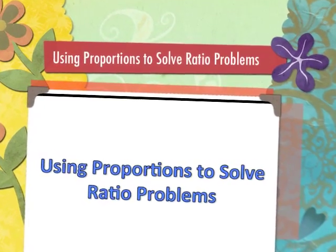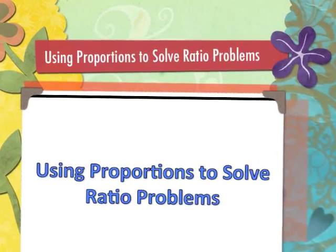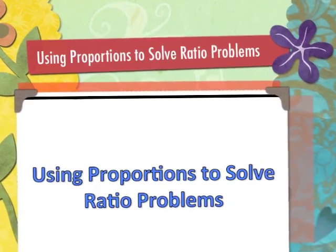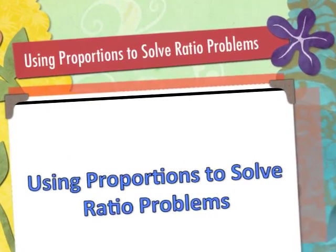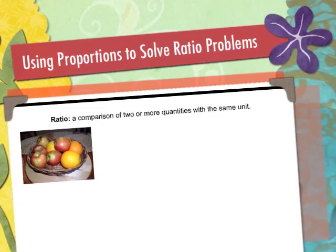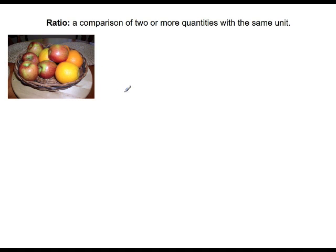In this lesson, we are going to learn how to use proportions to solve ratio problems. A ratio is a comparison of two or more quantities with the same unit. For example, let's compare apples to oranges.